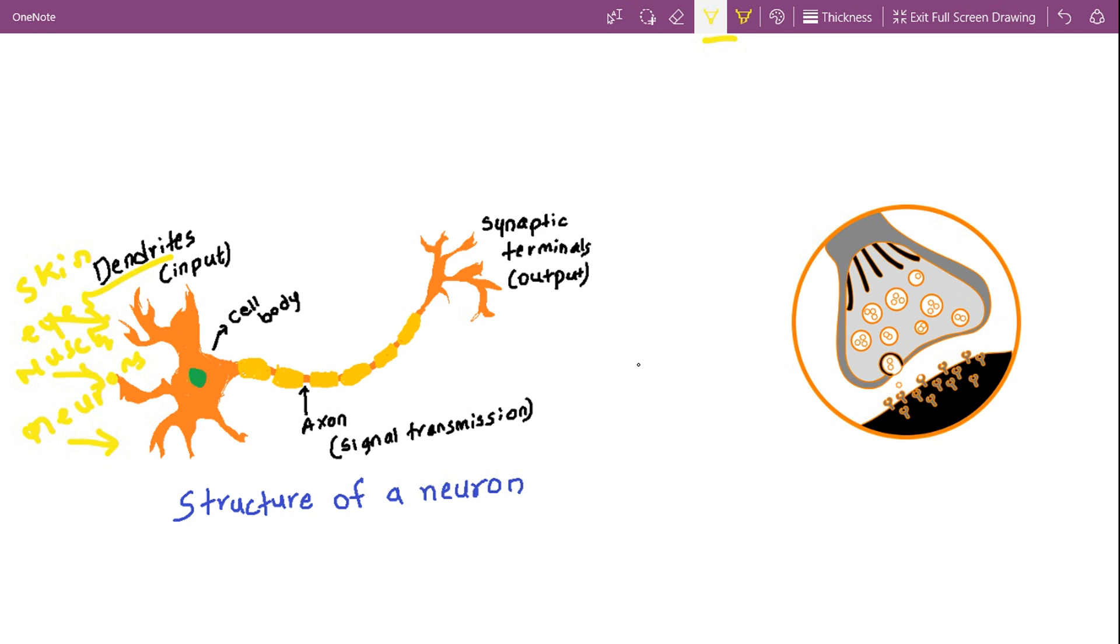The cell body sums up all these signals, and if the total signal exceeds a certain threshold value, it triggers the signal through the axon to synaptic terminals.